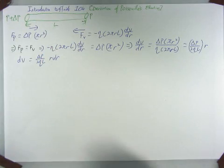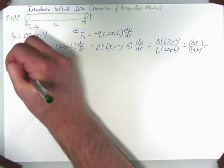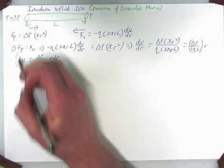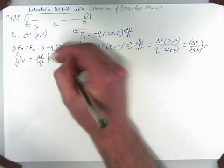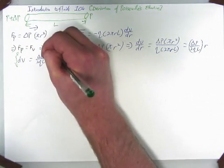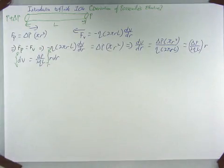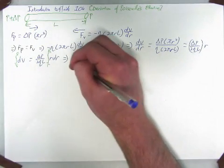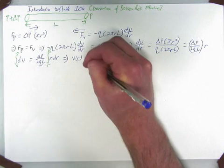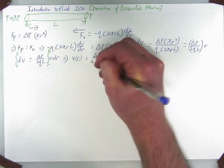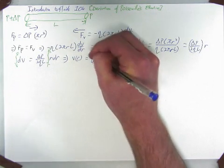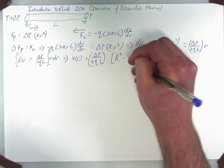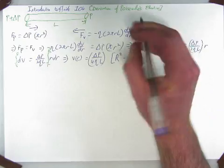Integrating from 0 to v on this side, and from little r to big R on this side. Therefore, we have the velocity as a function of radius equals delta P over 4 mu L times big R squared minus little r squared.